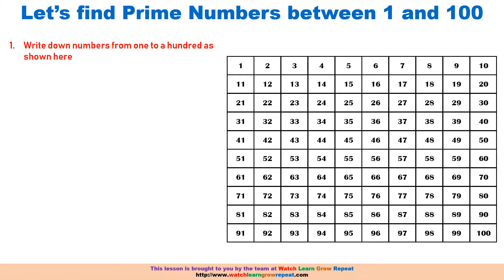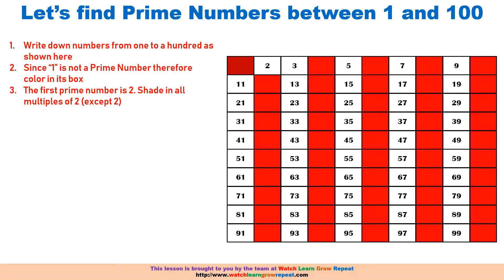Let's find the prime numbers ranging between 1 and 100. First, we write down all the numbers from 1 to 100 as shown in the table on the right. Since we've already discussed that one is not a prime number, we fill that box in. We know the first prime number is 2, so we go ahead and color in all the boxes with numbers which are multiples of 2 — except for 2 itself — so that would be 4, 6, 8, 10, and so forth.